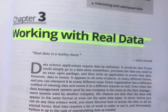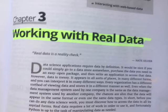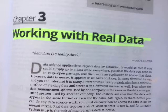Real data requires a lot of work in order to use it, and fortunately Python is up to the task of manipulating data as needed. This chapter helps you understand the techniques required to access the data in a number of forms and locations. For example, memory streams represent a form of data storage that your computer supports natively. Flat files exist on your hard drive. Relational databases commonly appear on networks, although smaller relational databases, such as those found in Access, could appear on your hard drive as well.